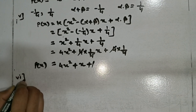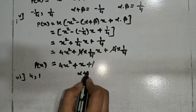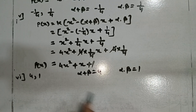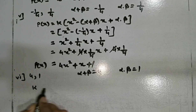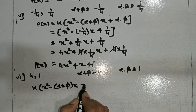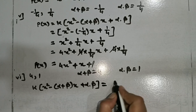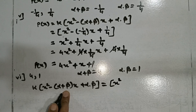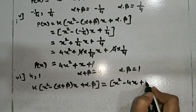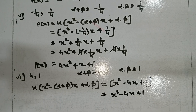Sixth case: α+β = 4 and α·β = 1. With K=1, the formula gives x² - 4x + 1. The required quadratic polynomial is x² - 4x + 1.